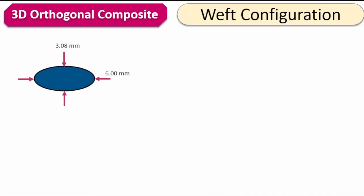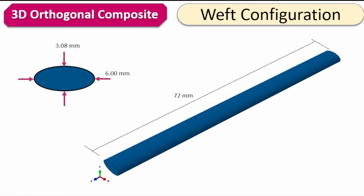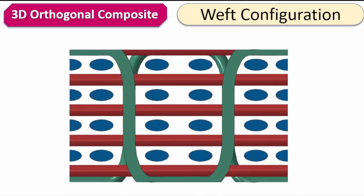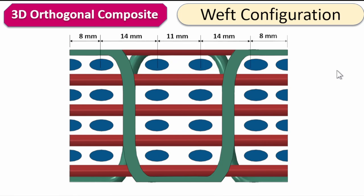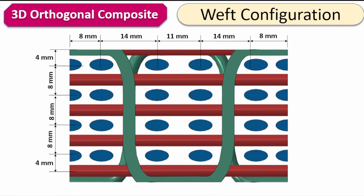Now, what about the weft configuration? It will have the same yarn geometry — the same fiber system — and an overall length of 72 millimeters, essentially extruded in a straight form with no undulations. The weft is the blue part in our design, distributed across the bulk. The green is the binder, the blue is the weft, and the brownish color is the warp. The spacing, both vertical and horizontal, depends on the volume fraction — you can adjust those numbers to achieve a higher volume fraction.